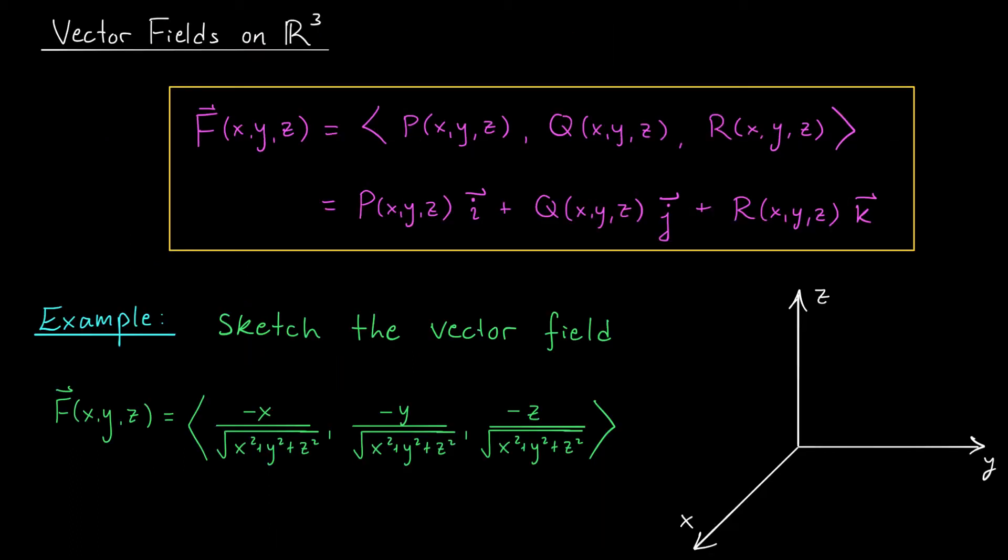The situation in R³ is similar, except of course, we have a third variable and a third component function. Our vector fields in general are going to look like F of x,y,z equals <p, q, r>, which again, we can express in terms of the standard basis vectors, p times i-hat plus q times j-hat plus r times k-hat.